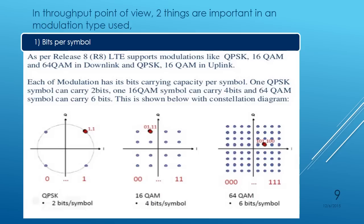If we assume we are achieving 3 Mbps throughput in QPSK, we will be achieving 6 Mbps throughput in 16 QAM and 9 Mbps throughput in 64 QAM. That difference is because 64 QAM has three times the bit-carrying capacity of QPSK. So bits per symbol — the bit-carrying capacity for each modulation scheme — is an important throughput factor.